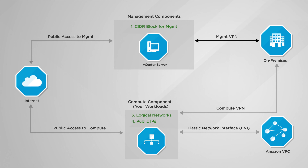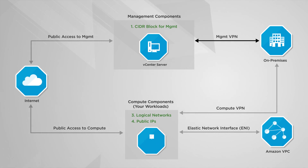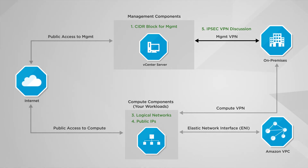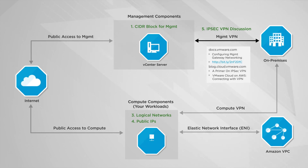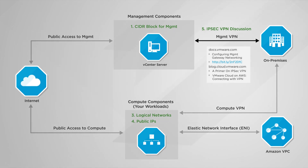Finally, you will want to start discussions with your networking team about your VPN connectivity needs for both the management and compute gateways. Your management VPN will allow connectivity between your on-premises vCenter environment and your VMware Cloud on AWS management components. VMware has provided detailed configuration guides and some helpful blogs focused on configuring the management VPN, including specifications on the required protocols, encryption algorithm, hashing algorithm, and Diffie-Hellman group settings.